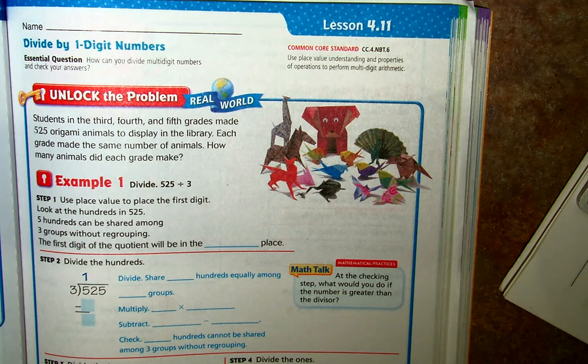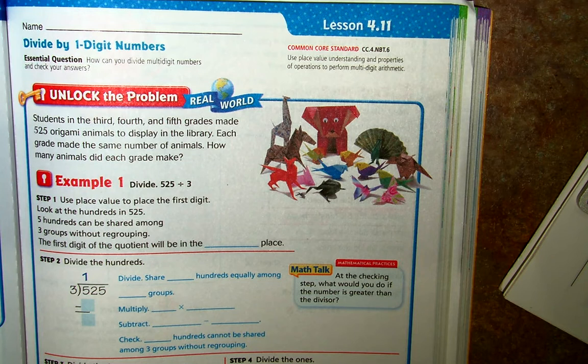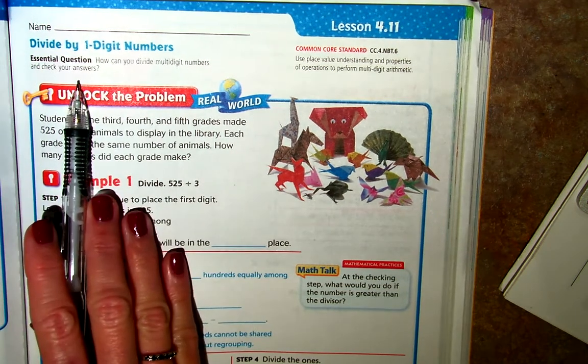Basically, what that means is we're going to use our understanding of place value and our understanding of multiplication, division, and subtraction in order to solve a division problem and to find a quotient. Our essential question is, how can you divide multi-digit numbers and check your answers?